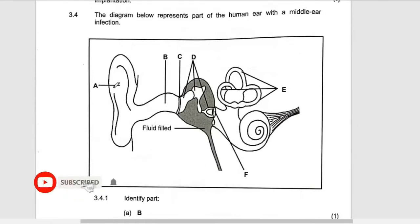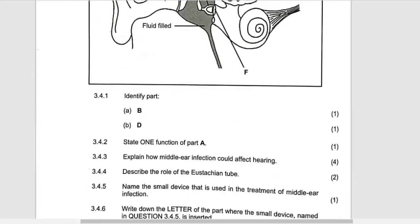What is A? You need to know pinna, auditory canal, tympanic membrane, the ossicles because there are three, semicircular canal, oval window, and then eustachian tube which is filled up with fluid. So that's why it is a middle ear infection.